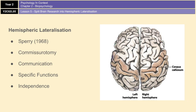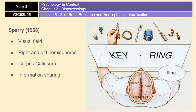Sperry devised a general procedure in which an image or a word could be projected to a patient's right visual field, which would be processed by the left hemisphere, and then the same or different image could be projected to the left visual field, which would be processed by the right hemisphere. In a normal brain, the corpus callosum would share the information between both hemispheres, giving a complete picture of the outside world. However, presenting the image to one hemisphere of a split-brain patient meant that the information could not be conveyed to the other hemisphere, because the communication between the two hemispheres was severed.